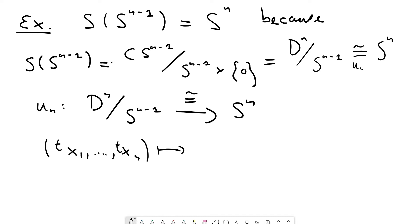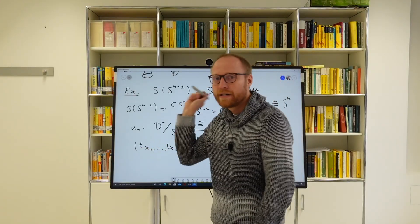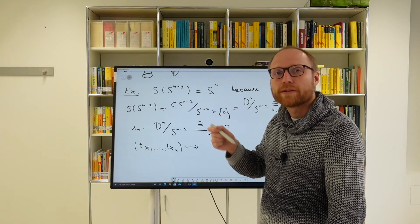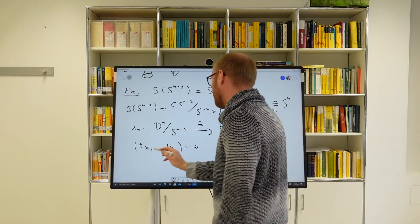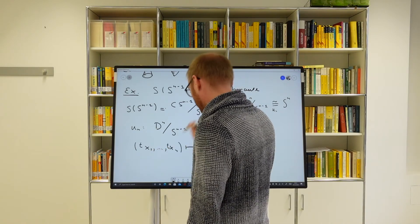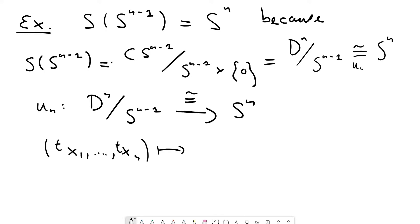So that sort of this x_1 until x_n, that's some point on the boundary of this disk on the S^{n-1}. And the t sort of declares how far you are away from the midpoint of that disk. So x_1 to x_n, that's the point in the boundary. And t tells you the radial coordinate. And you map this to u times x_1 until u times x_n, 2t minus 1.